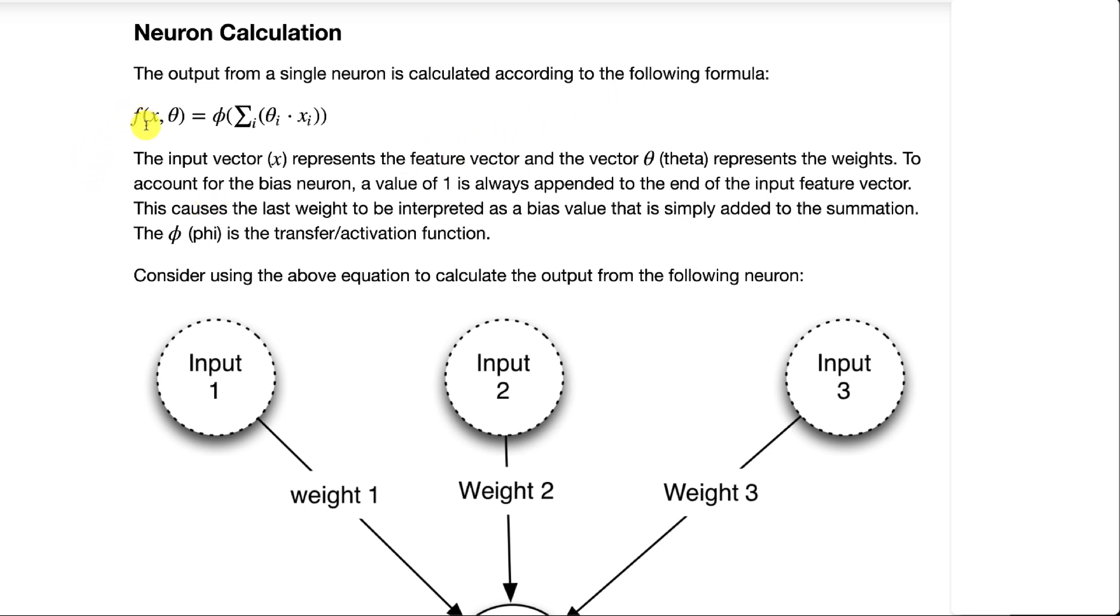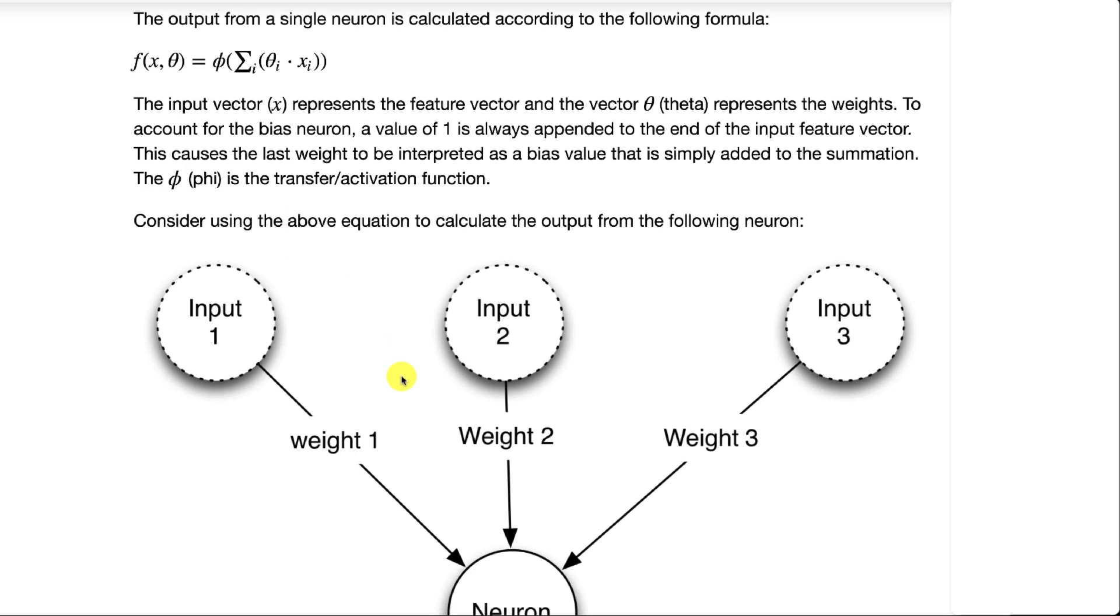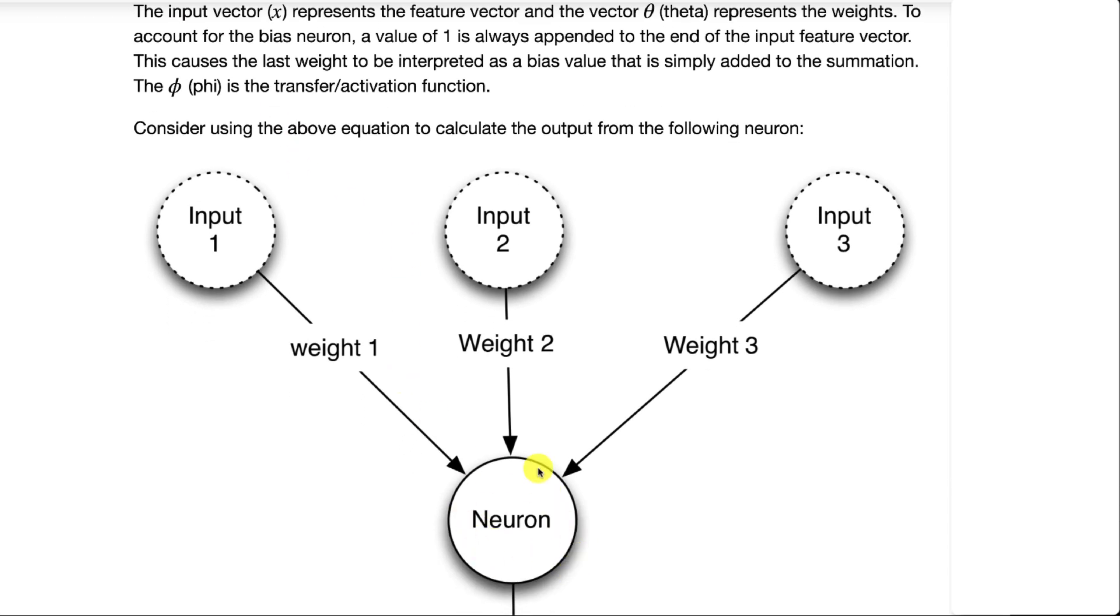The input to calculating one hidden neuron or an output neuron in the neural network essentially takes in the feature vector or the vector coming into it. If we were calculating for this neuron down here, the input vector would be 1, 2, 3, these values.